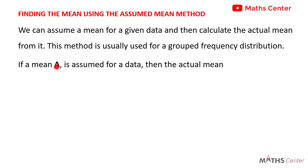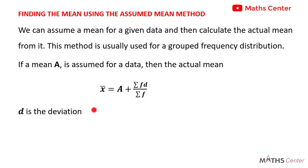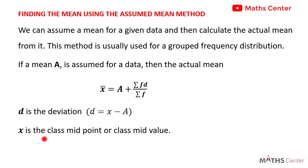If a mean 'a' is assumed for a data, then the actual mean is equal to the assumed mean 'a' plus sigma fd divided by sigma f. D is the deviation, and you obtain it by subtracting the assumed mean from the x values. The x values will be the class midpoints or the class mid-values. A is the assumed mean, and the f values will be the frequencies.